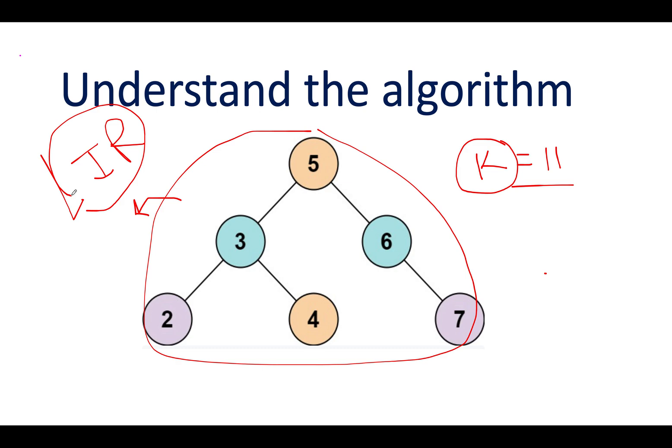We will also do the same. While traversing in an in-order fashion, we will keep on storing the elements in a list and this will give us a sorted format of this binary search tree. And let's do that. The first element that we have would be 2, then 3, then 4, then 5, then 6, and then 7.